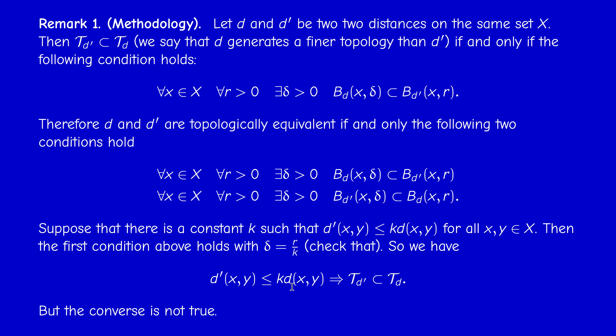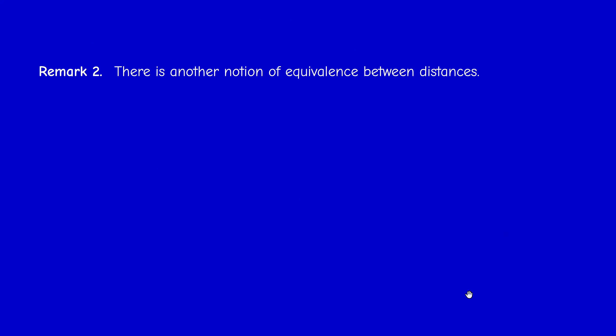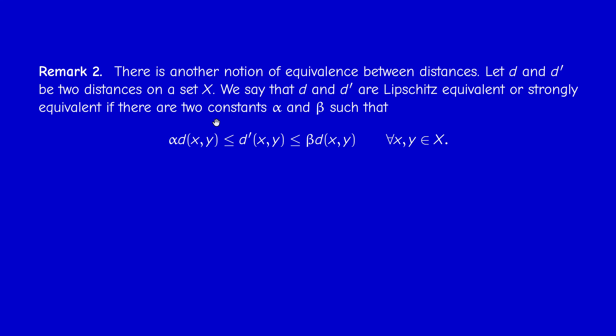If d' ≤ k·d, then T_{d'} ⊆ T_d, and here the order is preserved because you reverse it twice. If there exist constants α and β such that α·d ≤ d' ≤ β·d, then we say the two distances are Lipschitz equivalent. This was the case with d∞ and d₂ on ℝⁿ — we had something stronger than topological equivalence. Lipschitz equivalence implies topological equivalence, but the converse is not true.